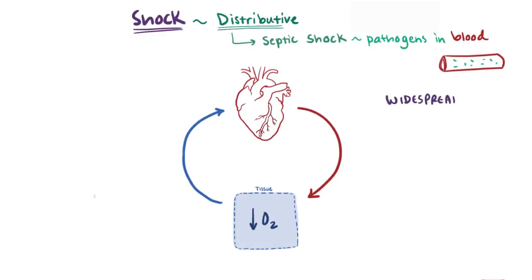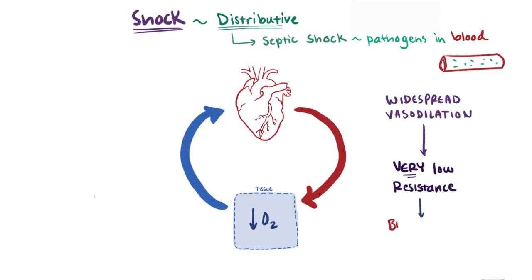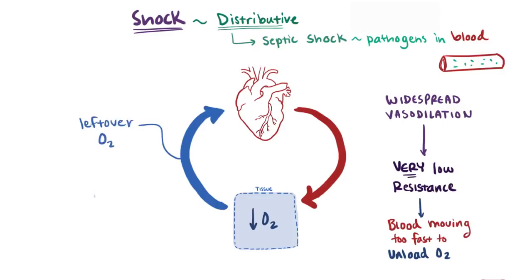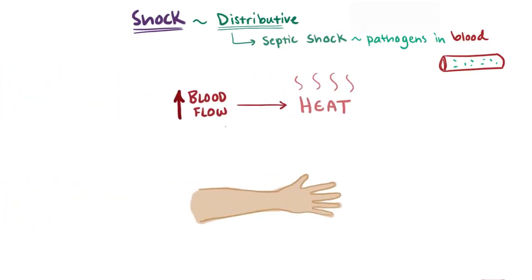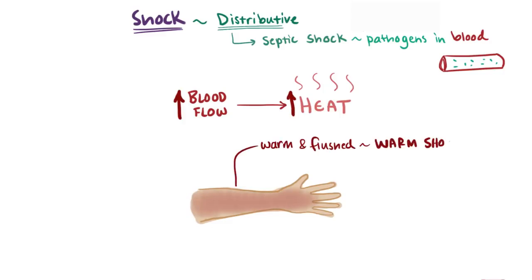This widespread vasodilation means very little vascular resistance, and blood can't get the chance to unload as much oxygen as it cruises through the vasculature, getting back to the right side of the heart with leftover oxygen. So in this case, as opposed to cardiogenic and hypovolemic shock, MVO2 can be normal or even increased. In contrast to hypovolemic and cardiogenic shock, there's an increase in flow in the peripheral blood vessels and the skin becomes warm and flushed, so distributive shock is a kind of warm shock.